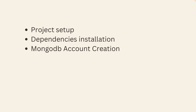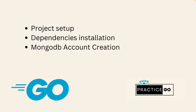In this chapter and the upcoming chapters, we are going to explore different aspects of this application. In future advanced lectures, we are going to add features like JWT tokens and other things, so stay tuned. In this particular chapter, we are going to set up the project and install the dependencies. In the next lecture, we are going to create a MongoDB account on MongoDB Atlas Cloud.